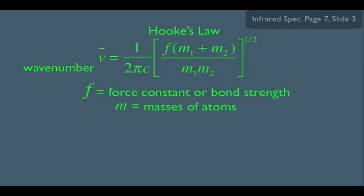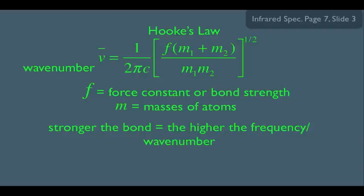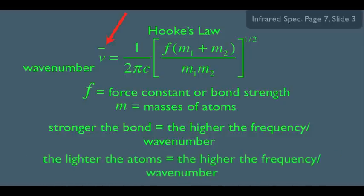With this understood, we can see from the equation that the stronger the bond, the higher the frequency or wavenumber — the bigger the f value, the bigger the wavenumber. Looking at the relationship between mass and wavenumber, the lighter the atoms, the higher the frequency or wavenumber. Mass 1 multiplied by mass 2 gives a bigger number than adding them, so the smaller m1 and m2 are, the greater the wavenumber — they are inversely proportional to each other.